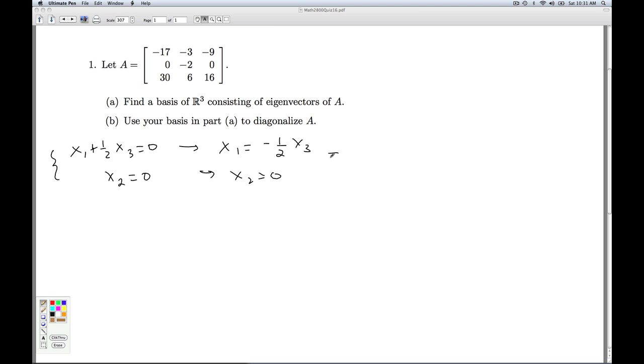So I put that together and I get for my solution, X1, X2, X3, I get minus 1/2 X3, 0, X3. I factor out the X3, and I get negative 1/2, 0, 1. So this is an eigenvector. I can take any non-zero multiple of that and still get an eigenvector. And so if I let X3 be 2, I can get the eigenvector negative 1, 0, 2.